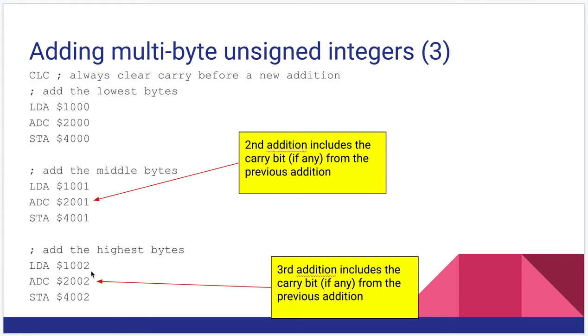Finally, we'll add the high byte. Load in what's at $1002, add it to what's at $2002, and store it back to $4002. Again, it would include the carry from what happened previously. And that's how you do multibyte unsigned integers.